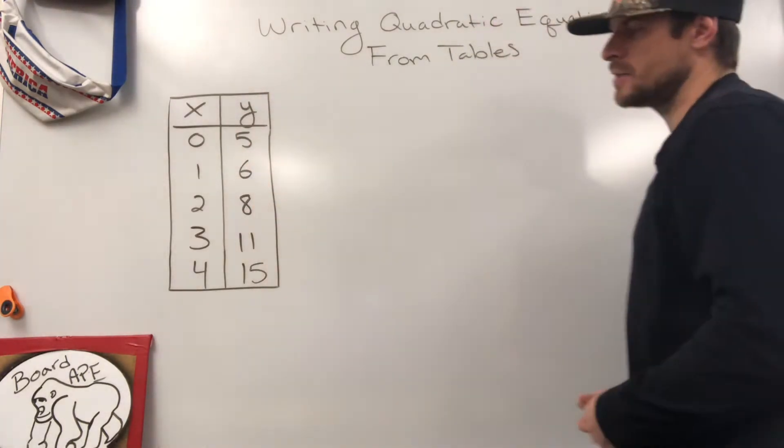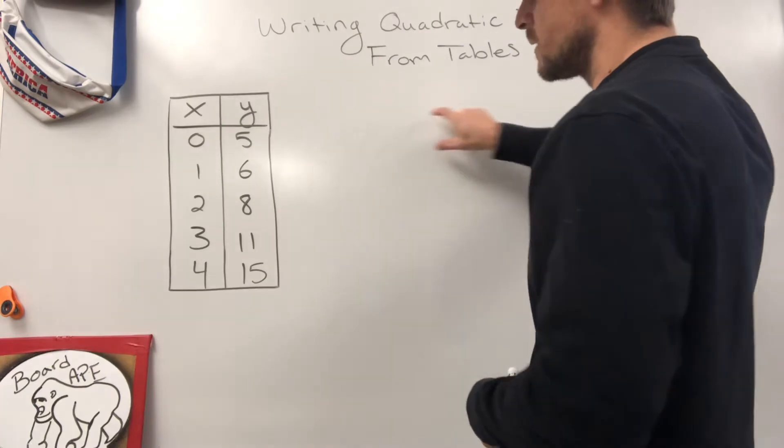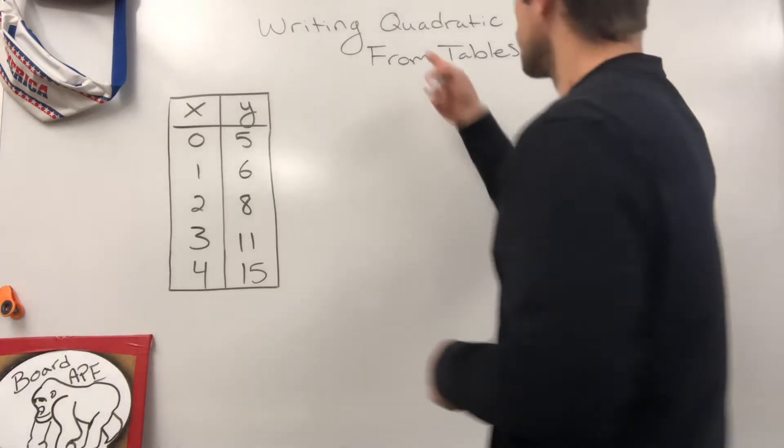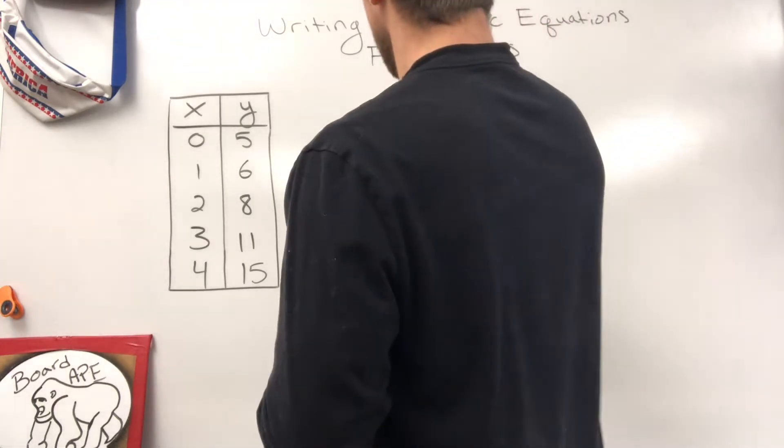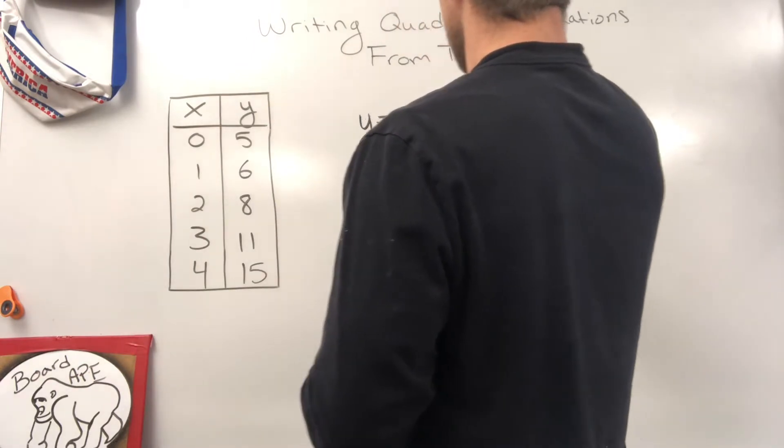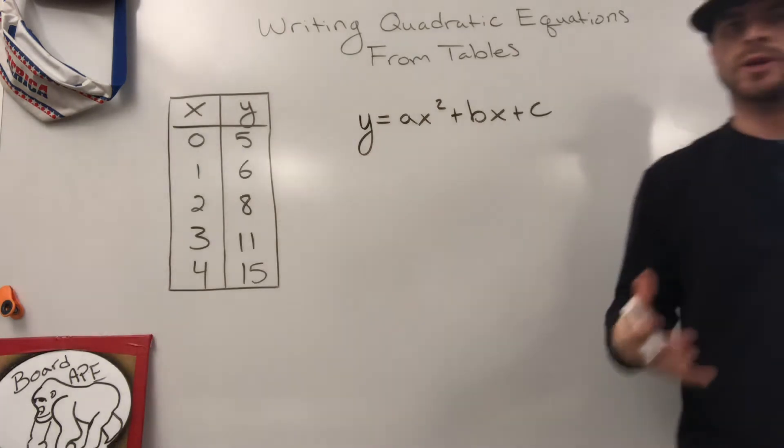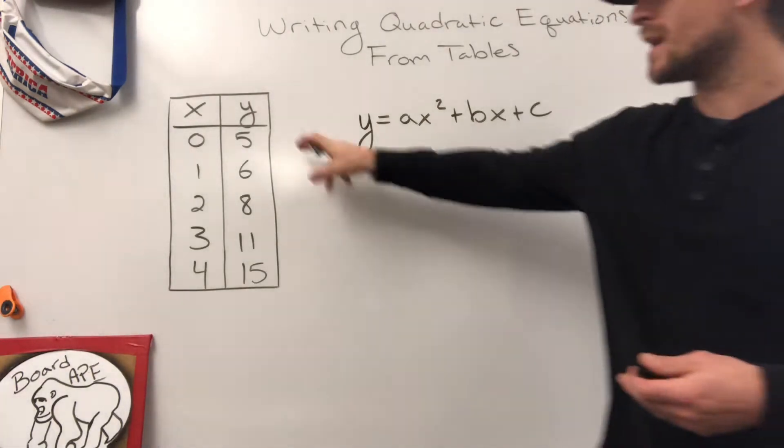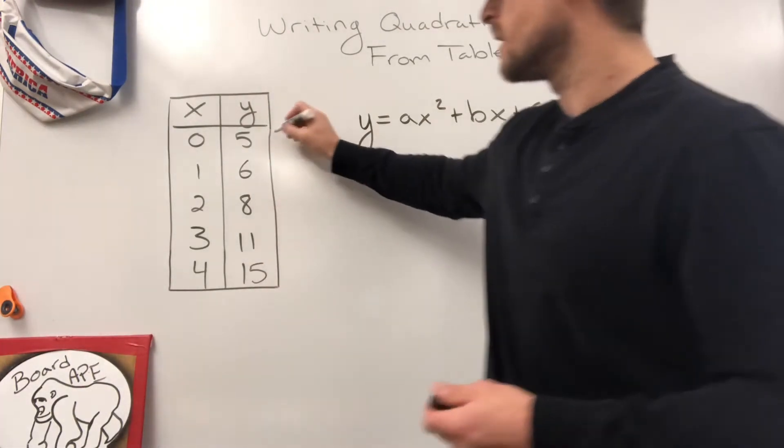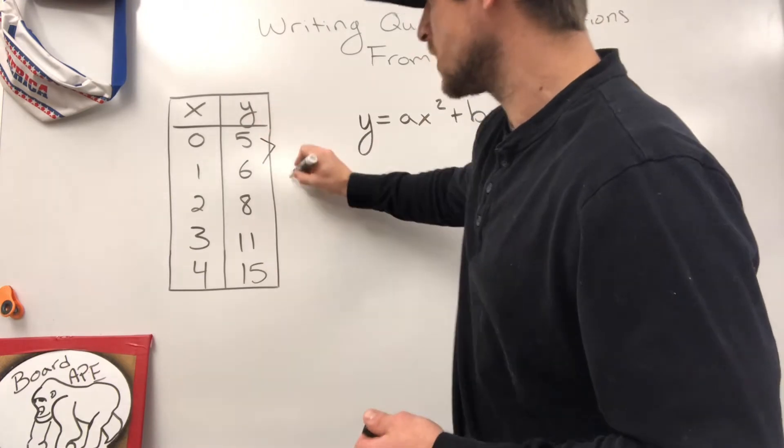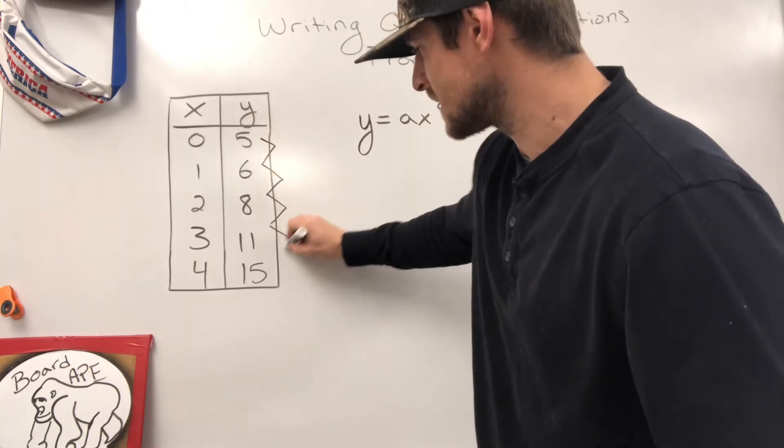So what we have here is a table of values, and we're no longer writing things in y equals mx plus b. Now we're writing quadratics out, so you are now at the point where y equals ax squared plus bx plus c needs to be written as your equation. We know that because we do not have a constant rate of change happening here. As you see, as we start to look at our change in y, we're going to notice that nothing here is constant.